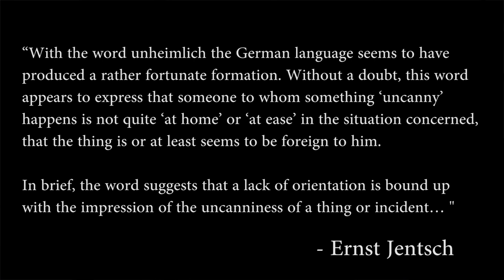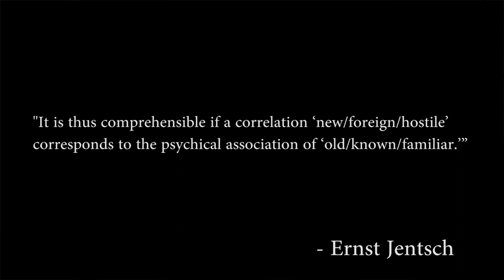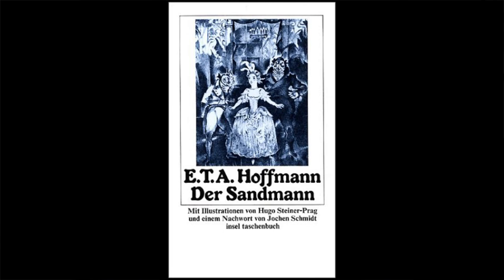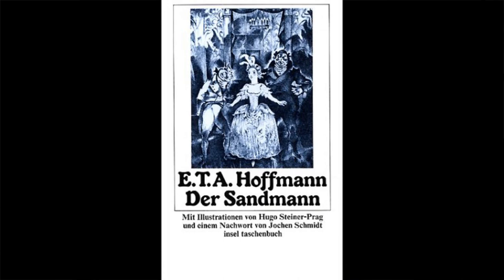It is thus comprehensible if a correlation — new, foreign, hostile — corresponds to the physical association of old, known, familiar. A story called The Sandman, written in 1816 by E.T.A. Hoffman, is centered around the character of Nathaniel, who falls in love with a mechanical doll named Olympia.